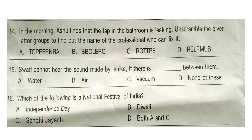Question 15: Swati cannot hear the sound made by Ishika if there is dash between them. Look at the options — you can also write down your answer in the comment section. The correct answer is option C — vacuum. Question 16: Which of the following is a national festival of India? The correct answer is option D — both A and C. Independence Day and Gandhi Jayanti are national festivals of India.